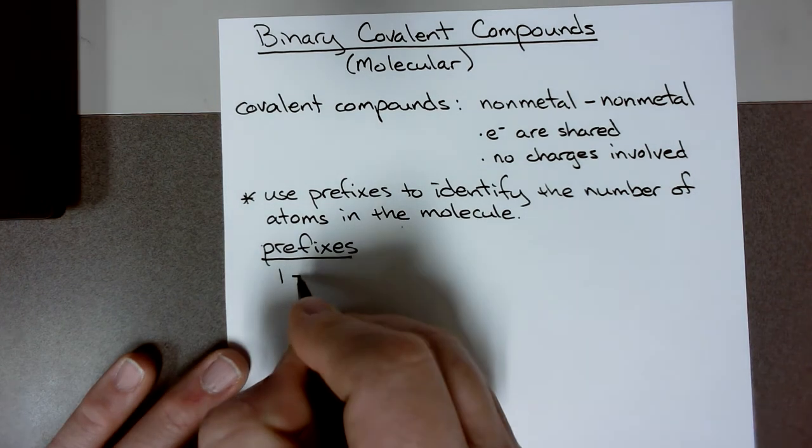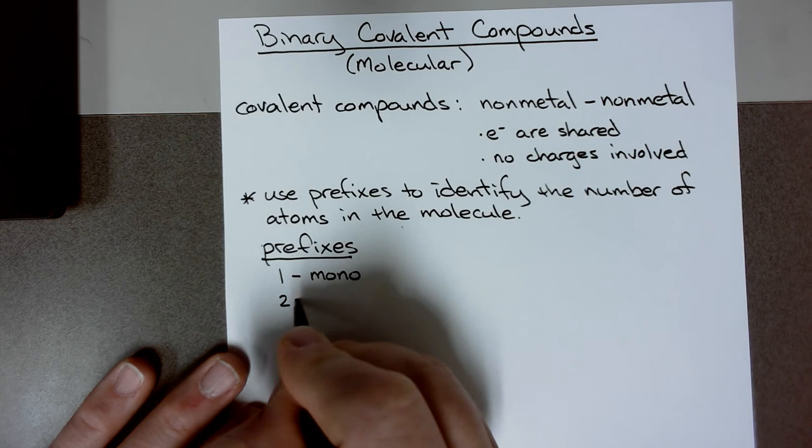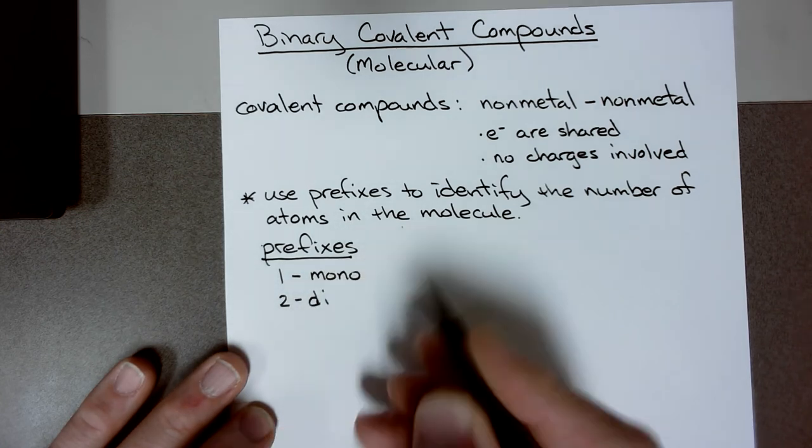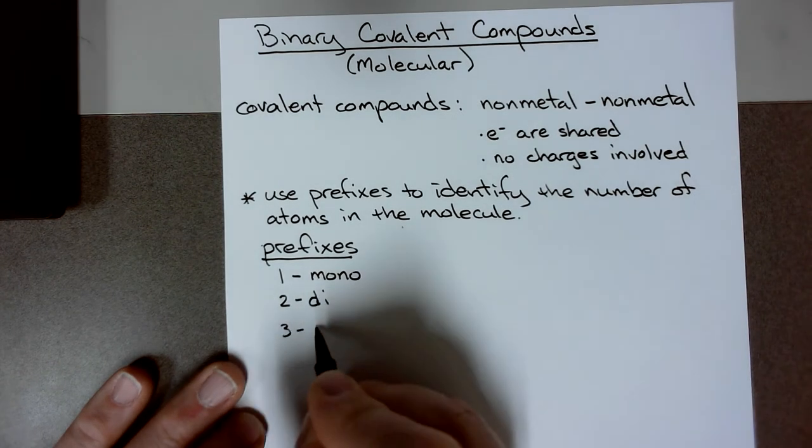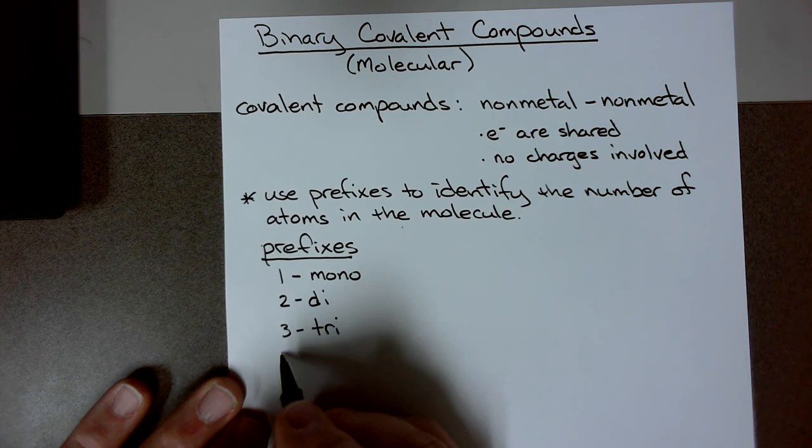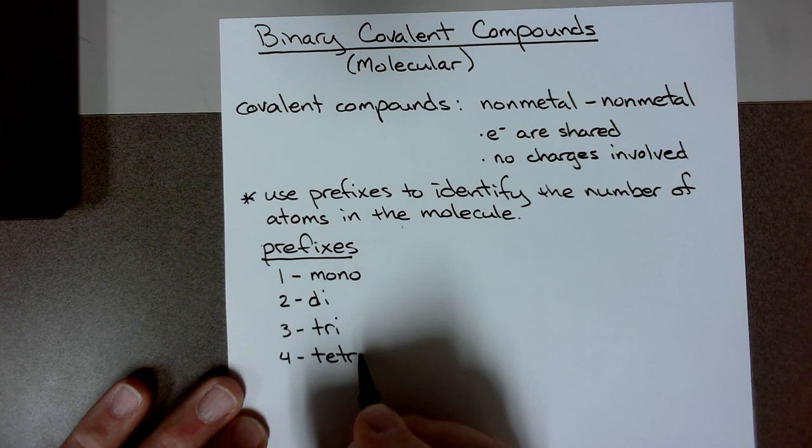If you have one atom, we use the prefix mono. If you have two atoms, you use the prefix di. So it's not bi, but di. Three is the same. We use tri like in tricycle, three wheels. Four is different. We use tetra, not quad.